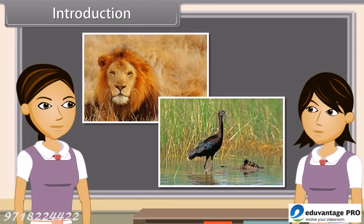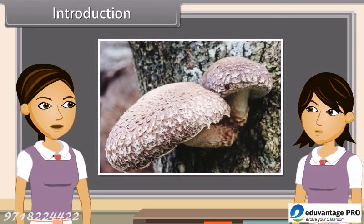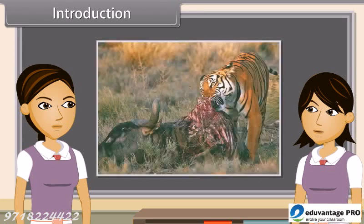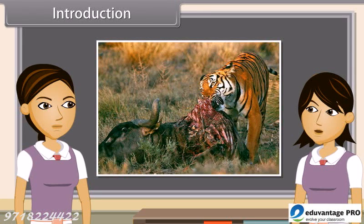We know that animals are heterotrophic and hence they depend on other organisms for their food. Animals need an external source of food. We can also say that they depend upon ready-made food, and this may come either from plants or from other animals.